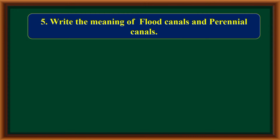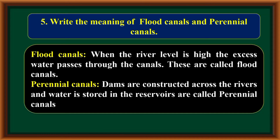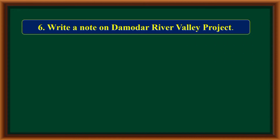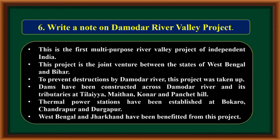There are two types of canals: flood canals and perennial canals. Flood canals carry excess water when the river level is high. Perennial canals are formed when dams are constructed across rivers, water is stored in reservoirs, and then provided for agriculture through canals.